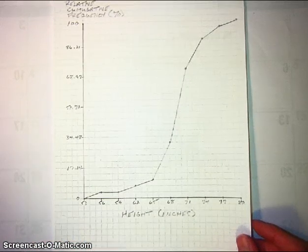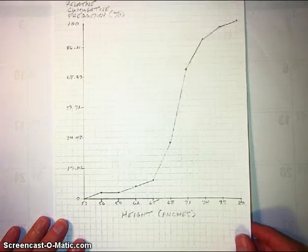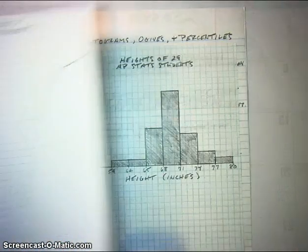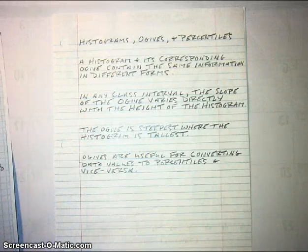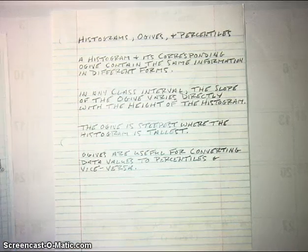Ogives have this extra nice feature that you can figure out the percentile that corresponds to a data value using an ogive. That's primarily what we use them for — they're useful for converting data values to percentiles and vice versa. We'll look at how that's done with an example.